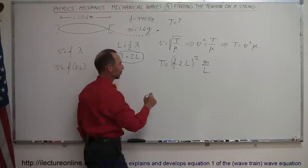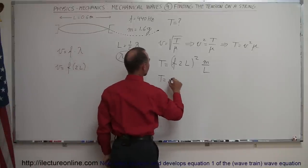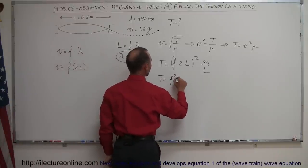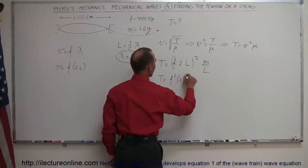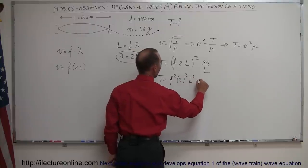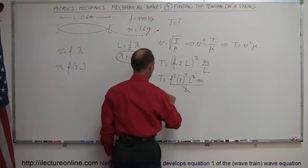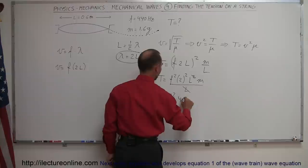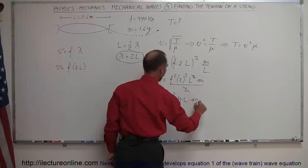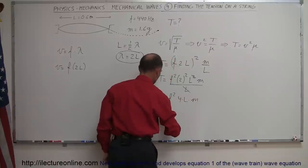Now we have to simplify that equation. So we have the tension is equal to the frequency squared times the number 2 squared times l squared times m divided by l. Of course this l cancels out that l, so the tension is equal to the frequency squared times 4 times l and times m. And we can then plug in the numbers for all that.